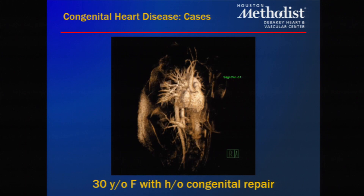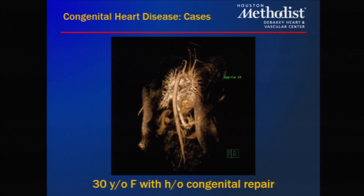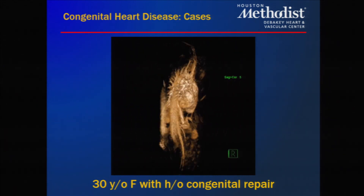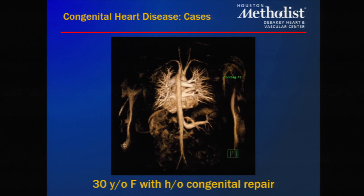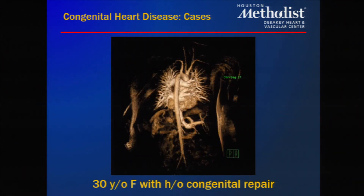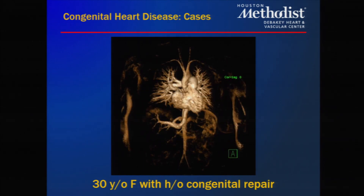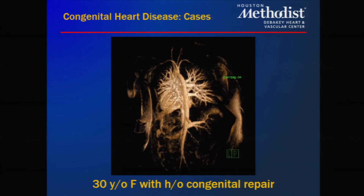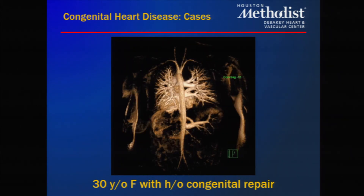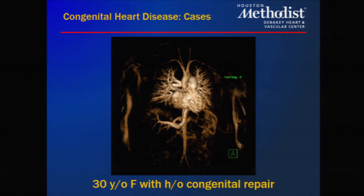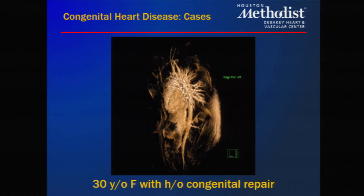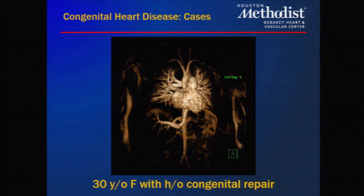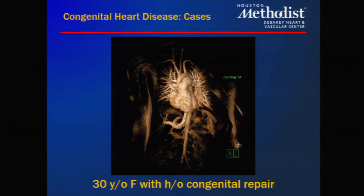Another patient was referred for established care with our congenital colleagues and had a congenital repair at birth. On cardiac MRI, we found that her pulmonary venous system looked unusual and very abbreviated. When we obtained her operative report, she had total anomalous pulmonary venous return repaired one day after birth. What was missed at birth was also an odd left atrial to pulmonary venous system shunt, which was picked up by our cardiac MRI techs. We can actually set phase contrast through this shunt and determine flow through it.